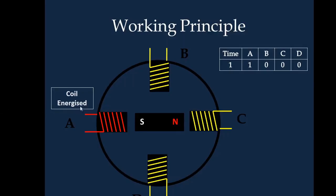Now if we energize coil A, it will act as an electromagnet which will make the rotor attract or get repelled to stay in this direction. Depicting in a table, at time instant 1 coil A is energized which is represented by 1, whereas the other coils are de-energized denoted by 0.